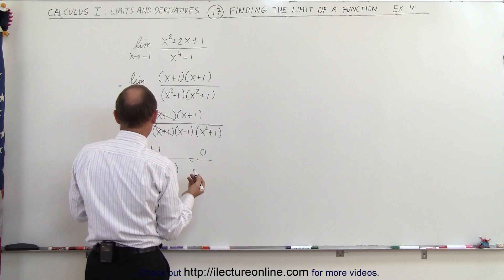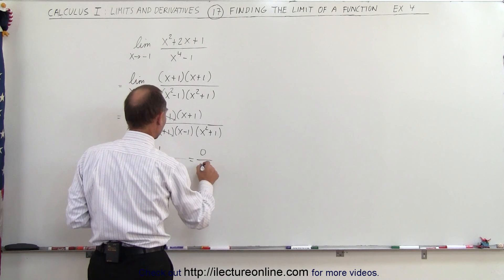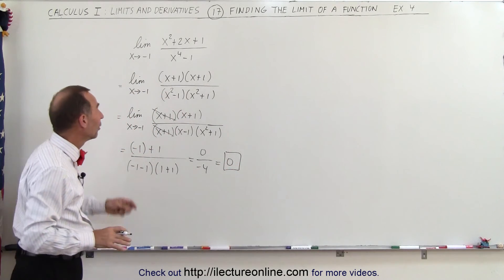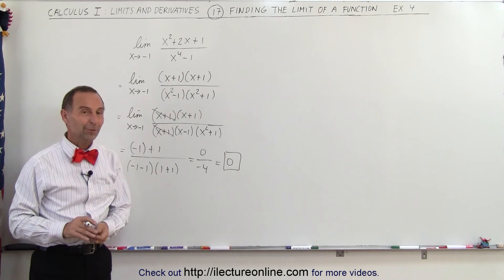and of course it doesn't matter what the denominator is, but just kind of curious, negative 2 times 2 would be negative 4, which is equal to 0. And so therefore the limit in this case is 0 when we let x approach negative 1. And that's how we do that.